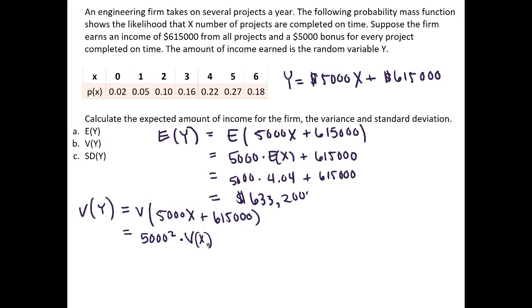Now we just drop off basically that addition of 615,000 because whenever we add a value to all the values in a random variable, it doesn't actually change the variability. It just changes where the center is. So that's why the 615,000 simply just goes away.